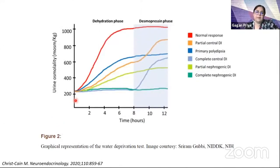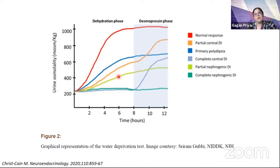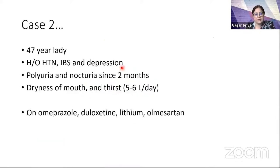At test termination, samples are taken and 2 micrograms of desmopressin IV or IM is administered, with sampling done for one to two hours while the patient is allowed adequate free water. Oral or nasal formulations are not preferred as their absorption is unpredictable. Normal individuals concentrate urine above 800 mOsm on water deprivation. DI patients will not concentrate, remaining below 300. Central DI patients respond to desmopressin with more than 50% increase in urine osmolality, while nephrogenic DI patients do not.